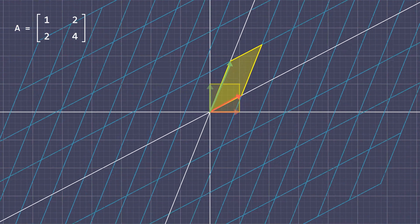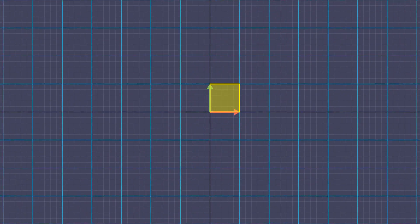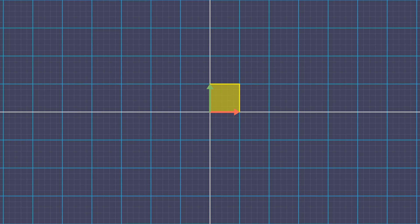Now we know how the area of the parallelogram changes and becomes zero when a matrix with linearly dependent rows is applied. Let's see what happens when the rows of the transformation matrix are linearly independent.